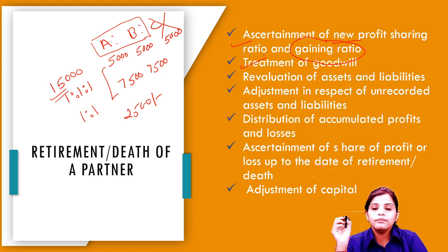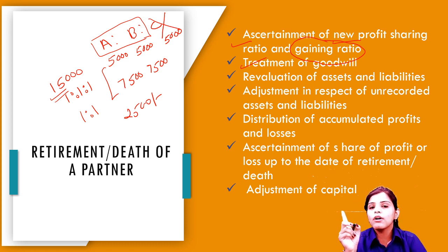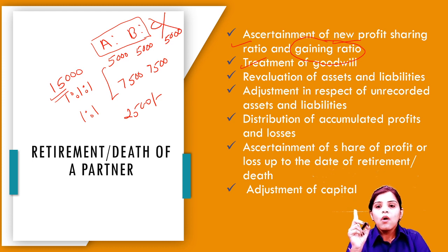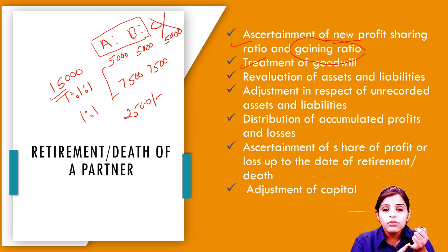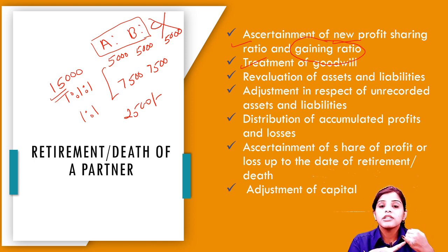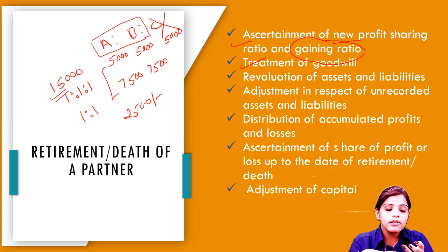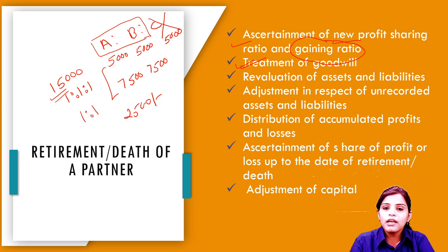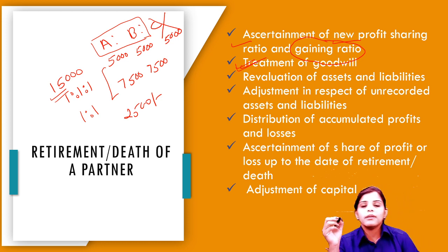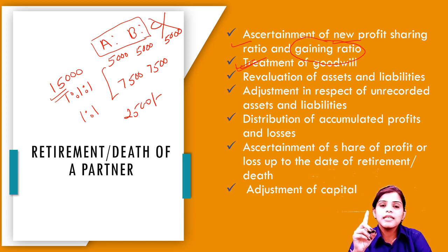Treatment of goodwill — goodwill की valuation की जाती है जब आप अपने P&L ratio को change करना चाहते हो, किसी नए partner को admit करते हो, किसी partner की death हो जाती है, या दो firms merge हो जाती हैं। At the time of retirement, जब भी कोई partner business से जाता है, तो उसको दो amounts का payment होता है — पहला उसकी capital और second goodwill।